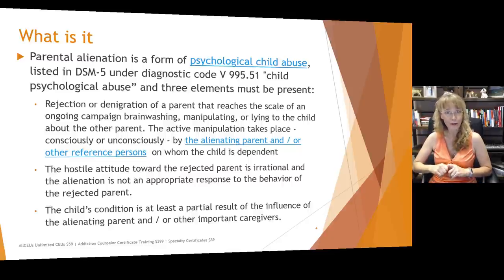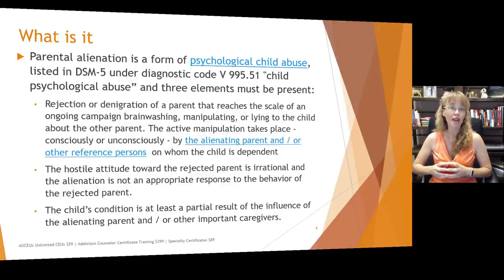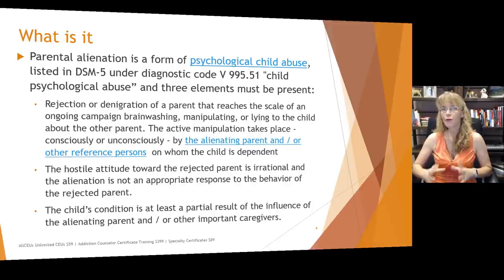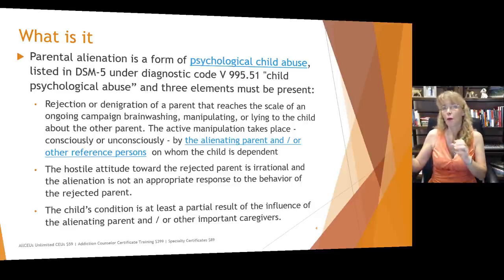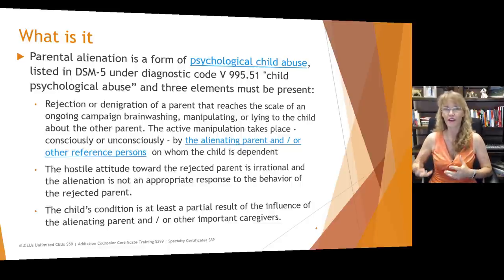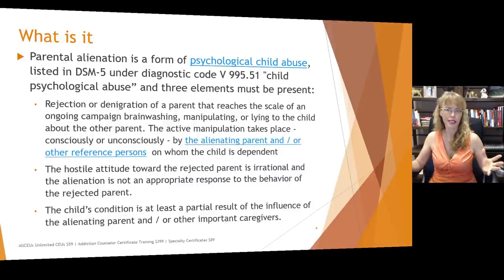What we are talking about is a form of psychological abuse which can be coded in the DSM-5 under diagnostic code 995.51, child psychological abuse. Generally when we're talking about parental alienation, what you're looking for is three characteristics. In the DSM what they list is child psychological abuse. Parental alienation syndrome is a term some researchers and psychologists have developed to categorize a particular type of behavior.